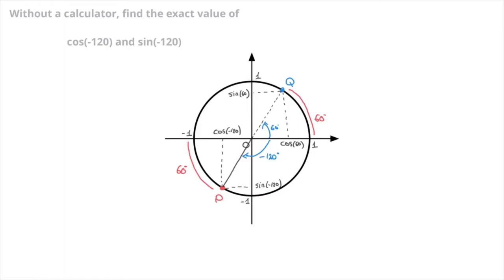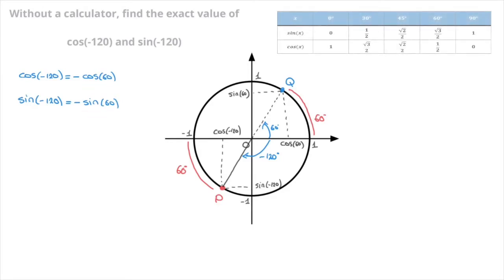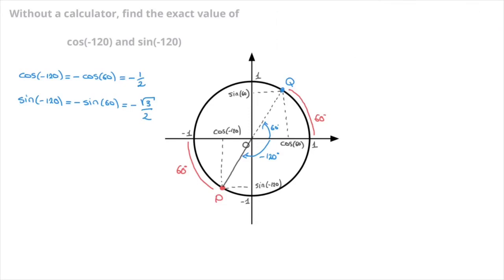In writing, that would be cosine of negative 120 equals negative cosine of 60. And both cosine of 60 and sine of 60 have well-known values. Indeed, cosine of 60 is equal to one half, so negative cosine of 60 is equal to negative one half. And sine of 60 is equal to the square root of 3 over 2, so negative sine of 60 is equal to negative square root of 3 over 2. And there we have it — we now have both cosine of negative 120 and sine of negative 120.